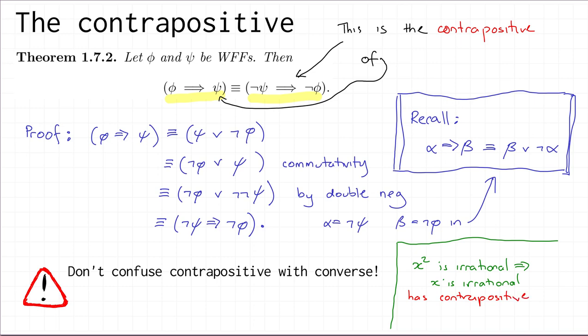The contrapositive would be: x is rational — meaning x is a fraction with integer numerator and denominator, like one over five or minus seven over a million — implies x squared is rational. That is much easier to prove: you assume x is rational, which tells you x can be written as an integer divided by an integer, and you can use that very easily to show that x squared is also an integer divided by an integer. So the contrapositive logical equivalence enables you to prove a logically equivalent statement that may actually be easier.